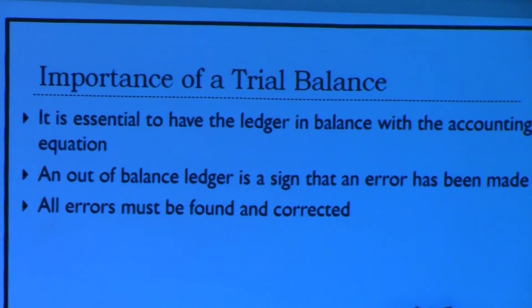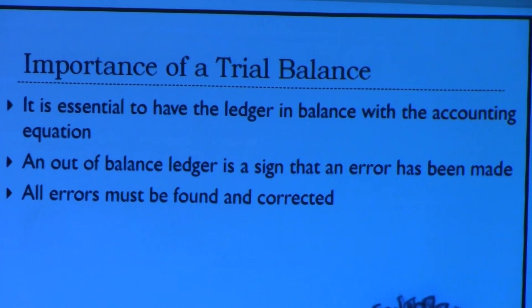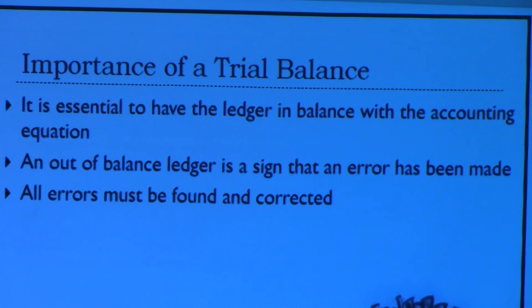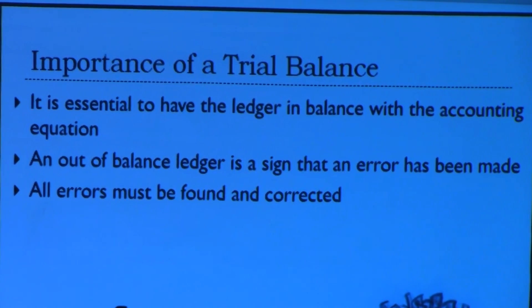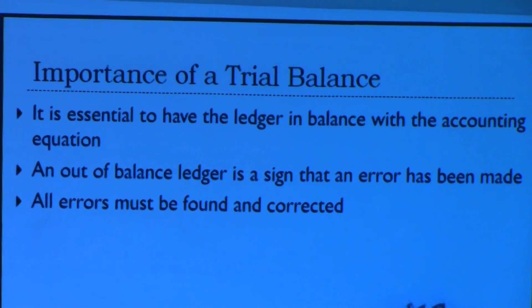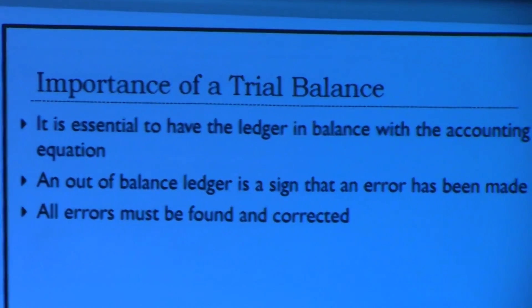Why is a trial balance important? It is essential to have all ledger accounts and T-accounts balanced before producing financial statements, as this is where the accounting equation must always be followed. An out-of-balance trial balance is a sign that an error has been made and must be corrected. All errors must be found and corrected before moving on to financial statements — if you do not, the financial statements become useless. Users rely on financial statements to make correct decisions, so accurate statements are critical.